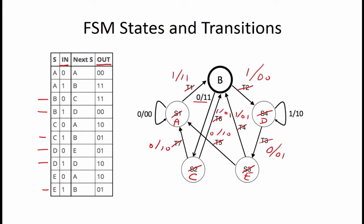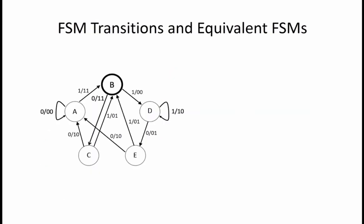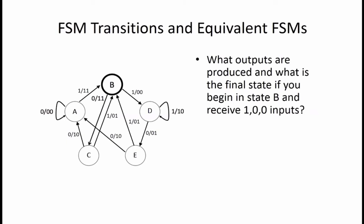Now that we have a complete state diagram for our FSM, the next thing we want to figure out is what sequence of outputs is produced if we begin in state B and receive inputs 1, 0, 0.